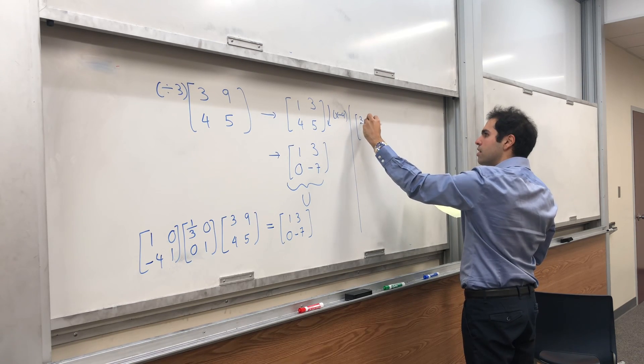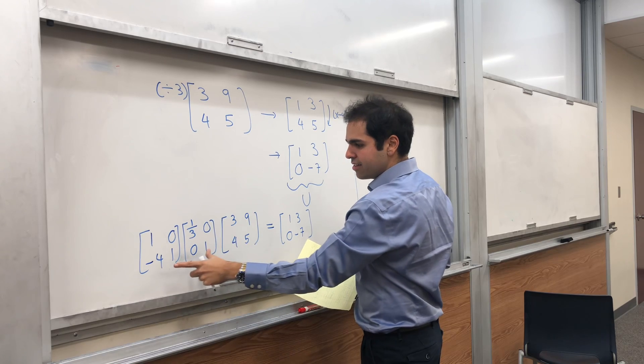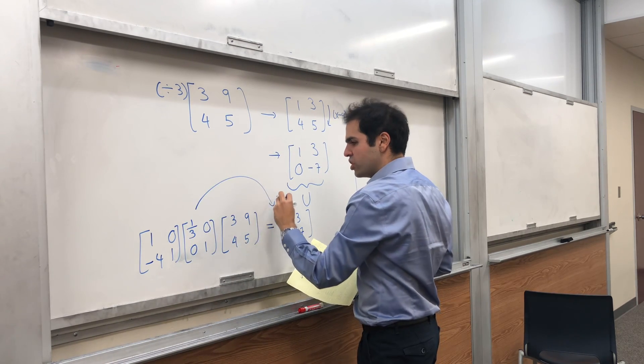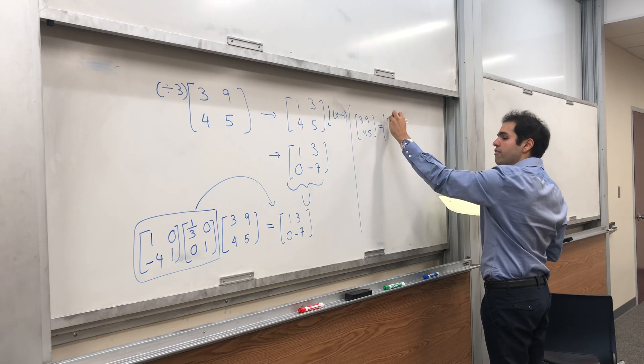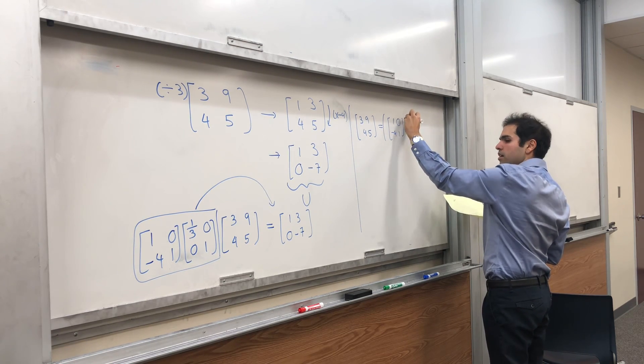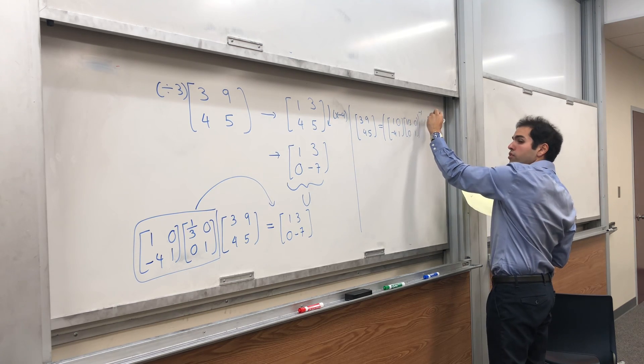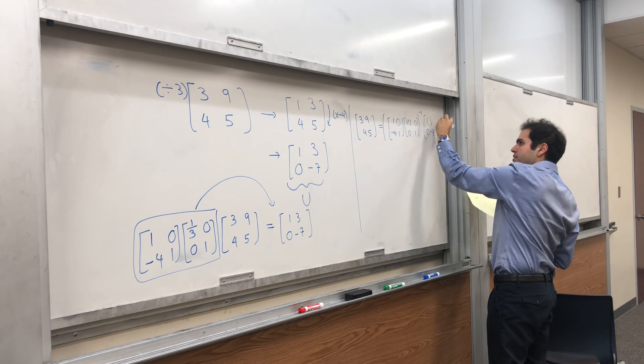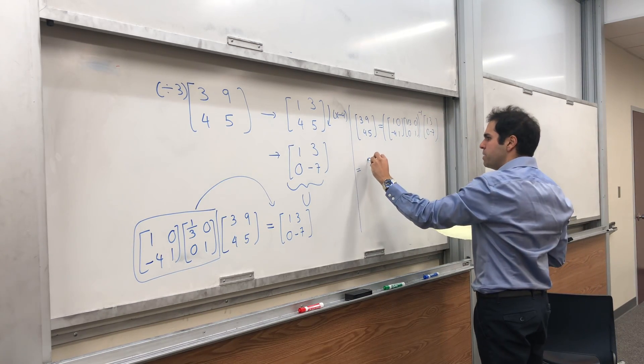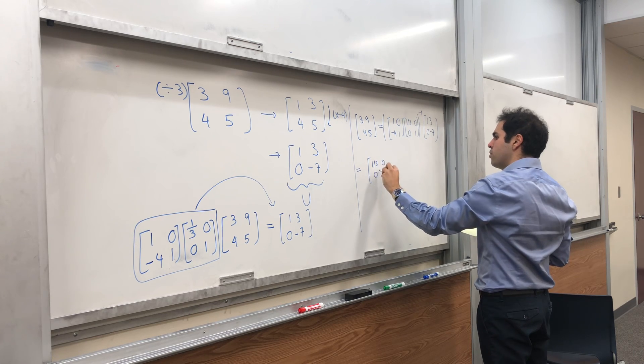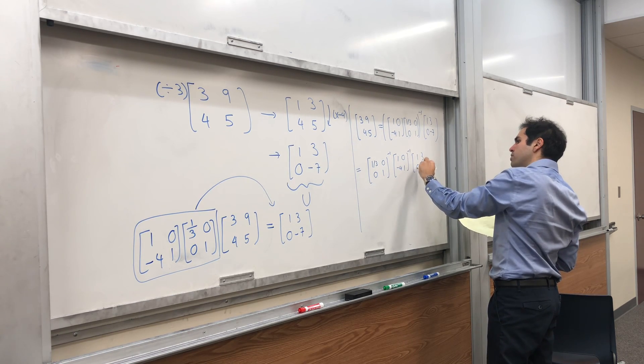We get 3, 9, 4, 5, equals to this matrix times this matrix. If we want to put this chunk on the left-hand side, we would have to use the inverse. So, this becomes, whatever this matrix is, 1, 0, negative 4, 1, times 1 third, 0, 0, 1, inverse, times 1, 3, 0, minus 7. And, remember, to find the inverse of a product, you reverse the order. So, it would be 1 third, 0, 0, 1, inverse, times 1, 0, negative 4, 1, inverse, and 1, 3, 0, negative 7.